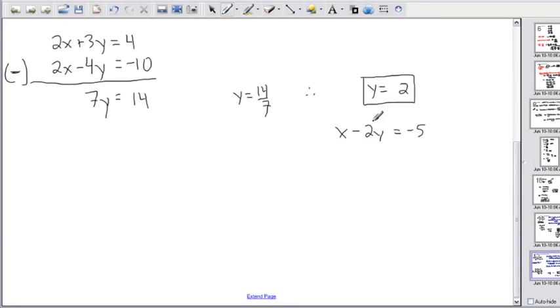I want to plug in what my y is. I know my y is 2. That means x minus 2 times 2 is going to equal negative 5. What's minus 2 times 2? Well that gives me minus 4. Remember order of operations. Do multiplying first. So I get x minus 4 equals negative 5. Since it's being subtracted, I can do opposites which is adding. So I'm going to get x equals minus 5 plus 4.